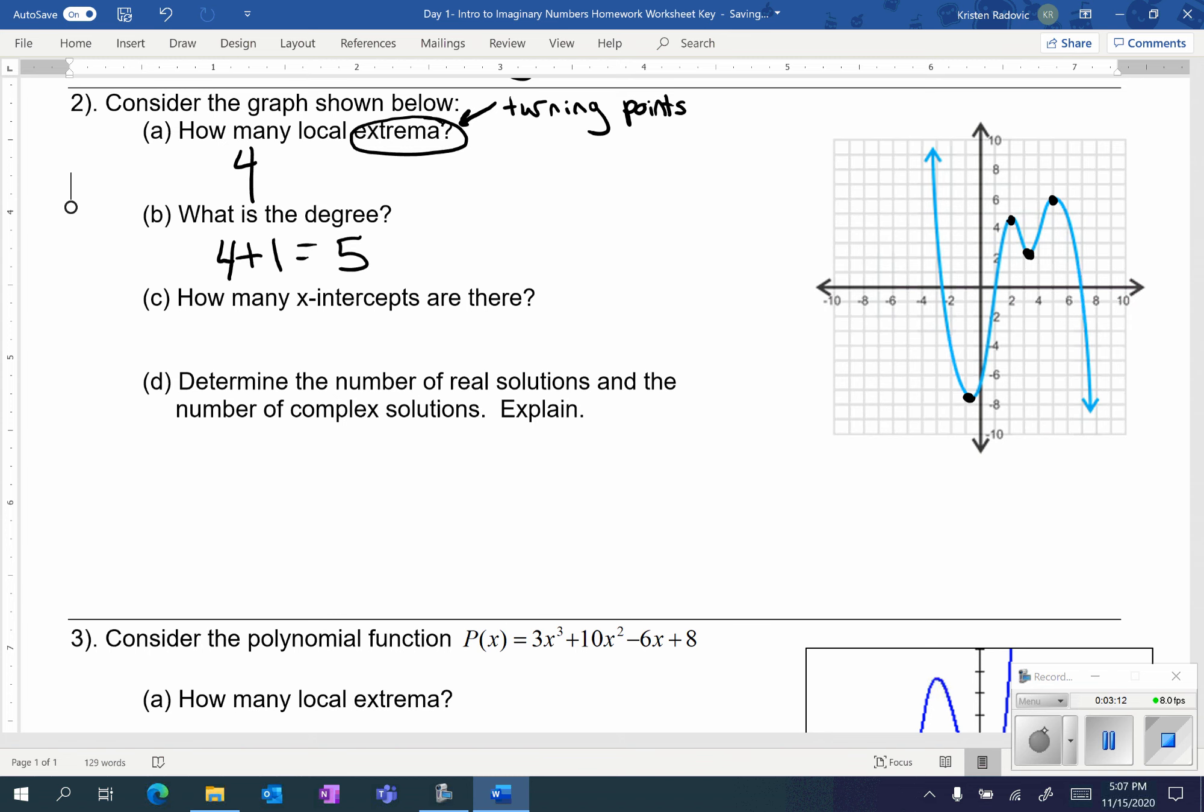Now we're looking at how many x-intercepts we have. And on this graph we have one, two, three x-intercepts.